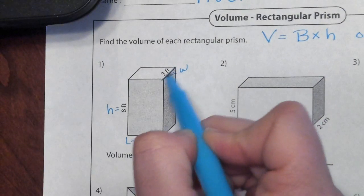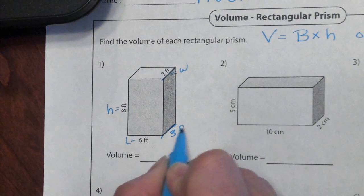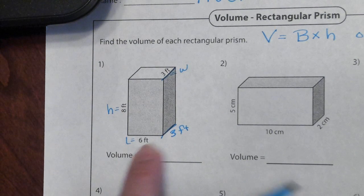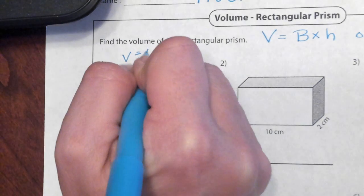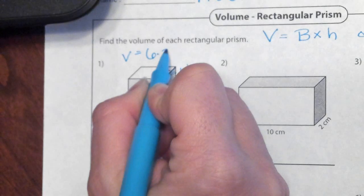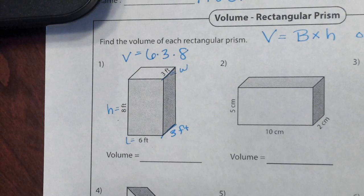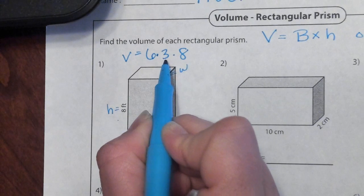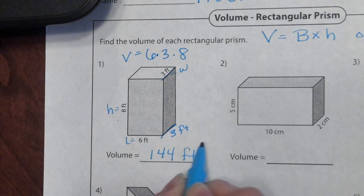So remember, this width is the same as this, so this would be three feet. To find the volume, we take the length times the width times the height. Six times three is eighteen, eighteen times eight. The volume is 144 feet cubed.